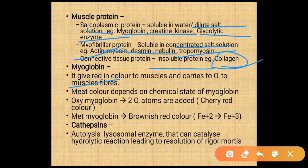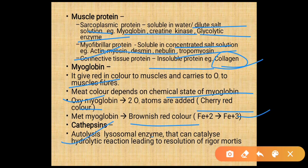Myoglobin is red in color and carries oxygen to the muscle fiber. Meat color is dependent on the chemical state of myoglobin. Oxymyoglobin gives a cherry red color when oxygen is added. Metmyoglobin is brownish red in color, formed when iron is oxidized.